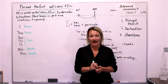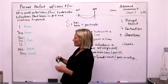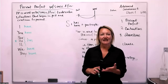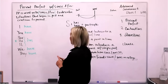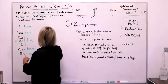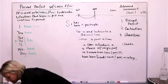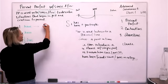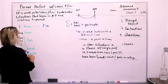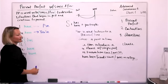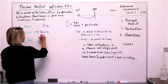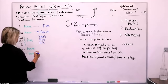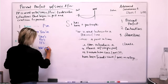Now let's combine those and make the contractions. I have becomes I've; you have becomes you've; she has becomes she's; he has becomes he's; it has becomes it's; we have becomes we've; and they have becomes they've.